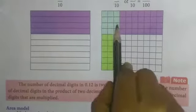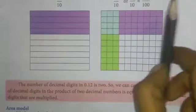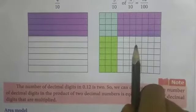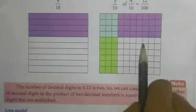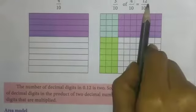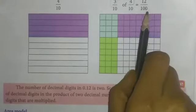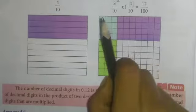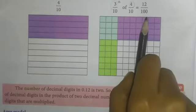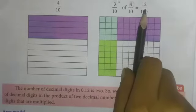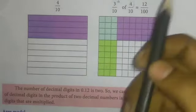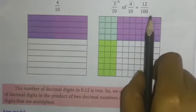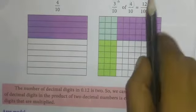So this is the answer. The answer is 12 by 100. Totally 100 squares, and the answer is 12 squares. So 12 by 100. Therefore 3 by 10 into 4 by 10 equals 12 by 100. So 0.3 into 0.4 equals 0.12.